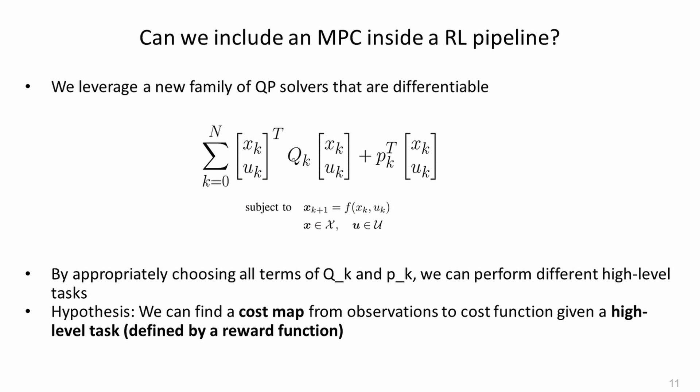Our hypothesis is that a cost map can be found from observations directly to cost function, given a high-level task defined by a reward function, by leveraging a new family of differentiable QP solvers.